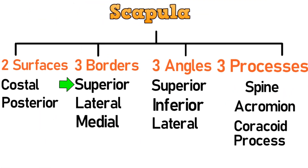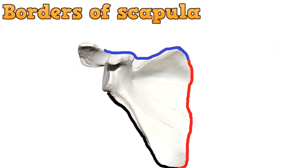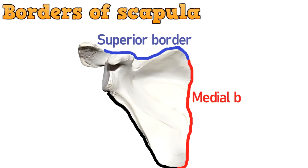Coming to the second part, that are the borders of scapula. As we discussed earlier, there are three borders of scapula, which are traced here in this image. This is the superior border, which continues to this medial border, which further continues to this lateral border.